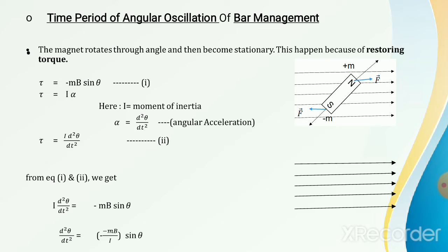Why does it reach a stationary position? The simple answer is: because of the restoring force. Now look here — this is the uniform magnetic field. After rotation, your bar magnet comes to this position. The force acting on the north pole will be in the direction of the magnetic field, and the force acting on the south pole will be in the opposite direction of the magnetic field. The concept is the same. According to this concept, the force acting on the bar magnet will reverse.